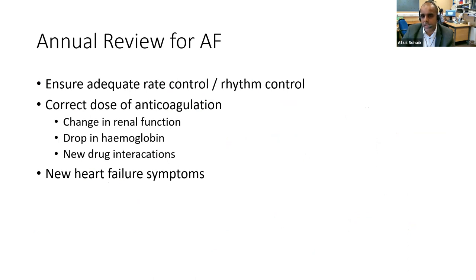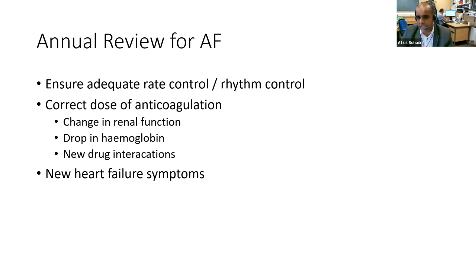For annual reviews of AF patients: ensure heart rate is adequately controlled with appropriate rate control medications; assess rhythm control in persistent AF — is there deterioration? As patients get older, renal function tends to deteriorate, so check they're on the right dose of anticoagulation — for example, if creatinine clearance drops from 55 to 45, they need to go from 60mg to 30mg edoxaban. Has there been a drop in haemoglobin? Has anticoagulation unmasked an underlying malignancy? Has a new drug been started that affects DOAC metabolism? And if AF is poorly controlled, watch for heart failure symptoms.